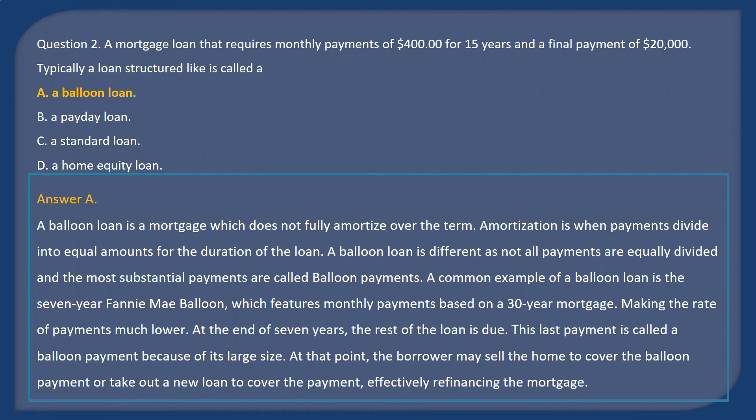A balloon loan is different as not all payments are equally divided, and the most substantial payments are called balloon payments. A common example is the seven-year Fannie Mae balloon, which features monthly payments based on a 30-year mortgage, making the rate of payments much lower. At the end of seven years, the rest of the loan is due — this last payment is called a balloon payment. The borrower may sell the home or refinance to cover it.